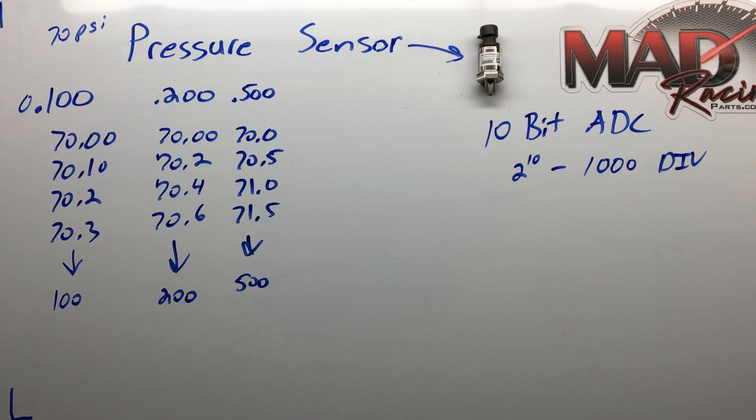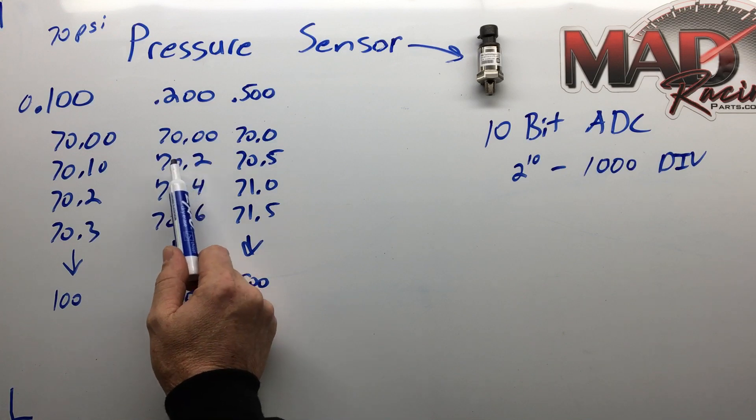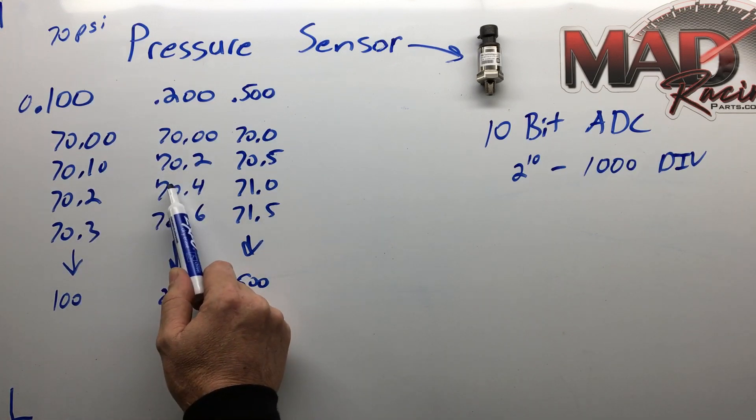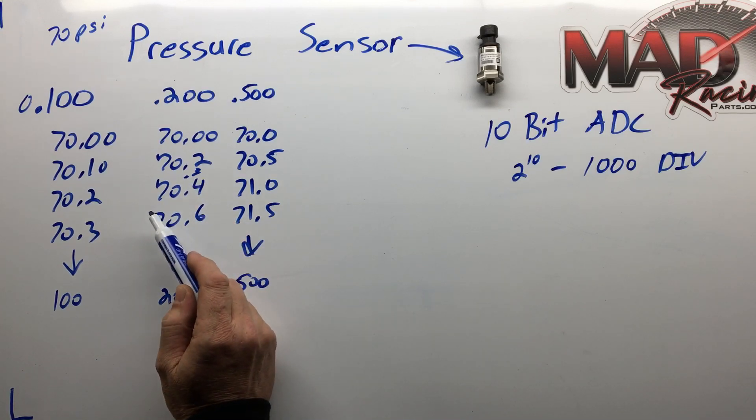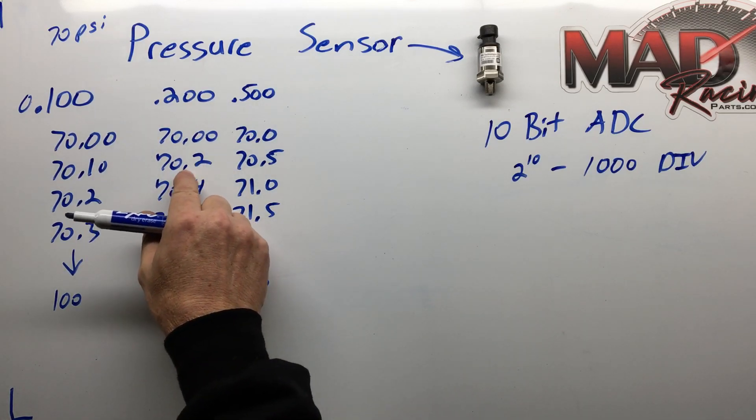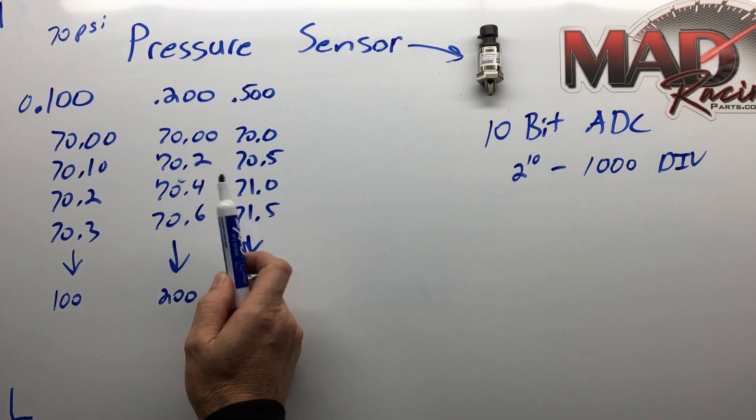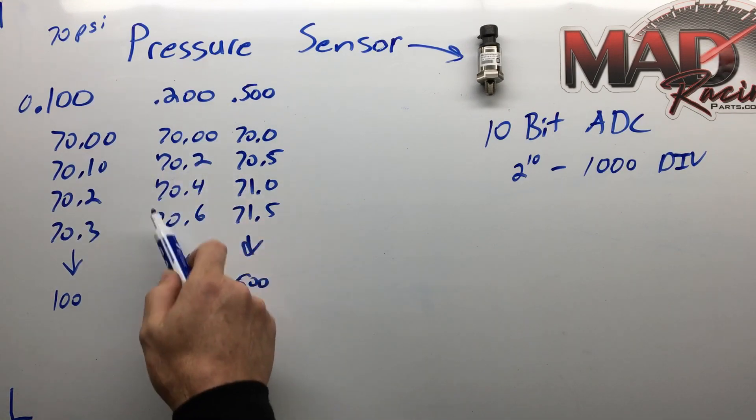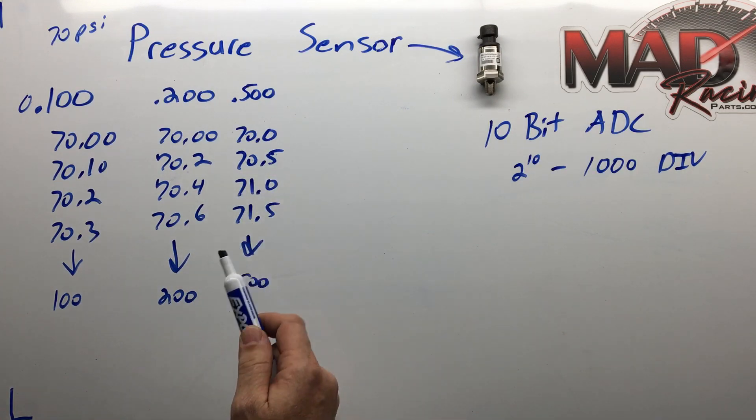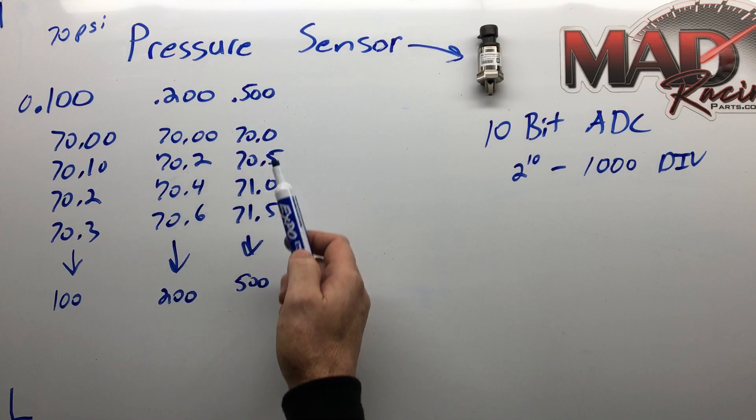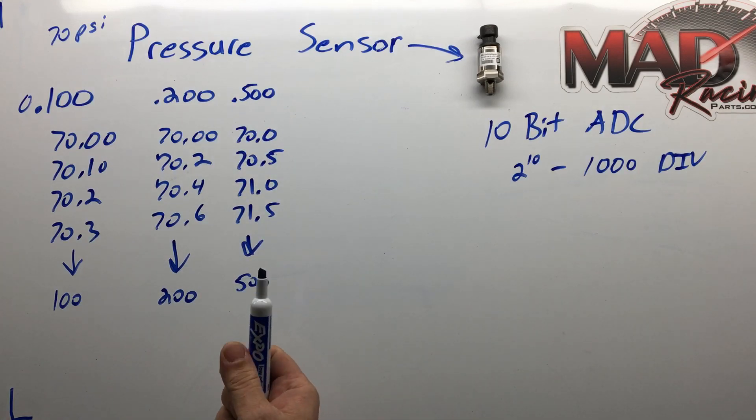Pretty straightforward, but what I want people to think about is do you really care if your engine oil pressure is 70.2 or 70.3 or 70.4? Do you need that 0.3 in the middle, or are you happy just knowing it was either 0.2 or 0.4? Most people would be happy with that, and even half pound increments most people would be happy with. If they knew their oil pressure within a half a pound, they'd be satisfied that they have oil pressure.